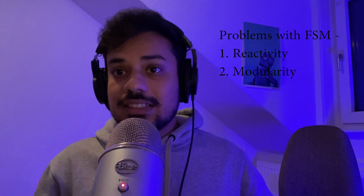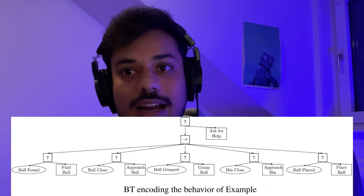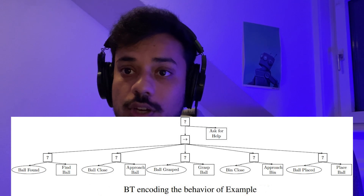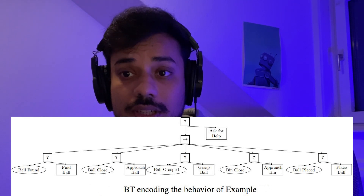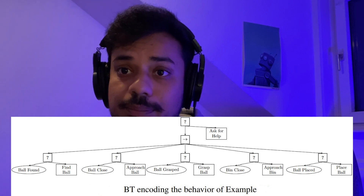These are the two main problems with finite state machines, and a finite state machine starts failing practically for development and deployment once the system starts becoming more complicated. It's great to use an FSM if the system is very simple and your environment is constrained and predictable. But because of these two issues, in general, as the system becomes more complex, a finite state machine is not scalable. That is the problem which led to the creation of behavior trees.